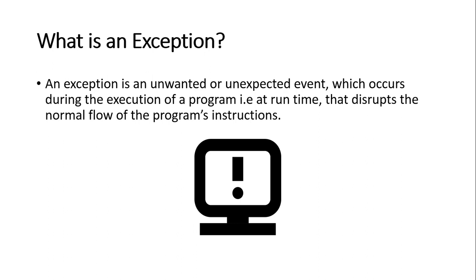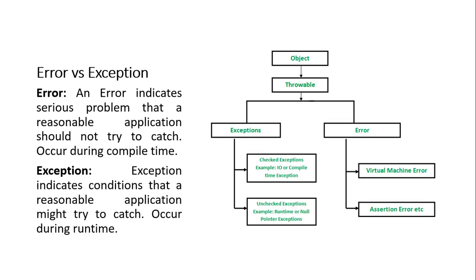One thing to keep in mind: exception and error are referred to as different concepts. Error cannot be handled using a try-catch, and it occurs during compile time — errors like a semicolon missing, spelling missing, etc. Whereas an exception can be handled using a try-catch, which occurs during runtime.